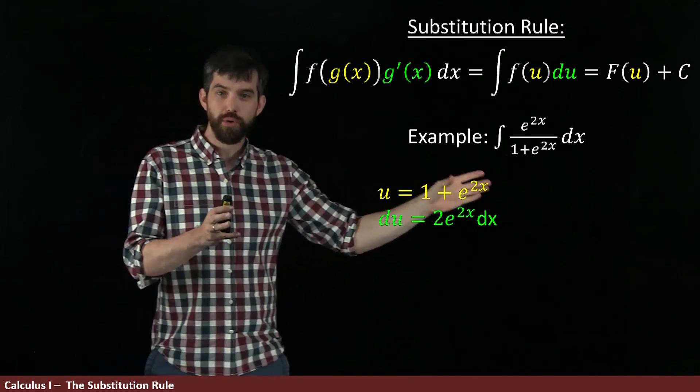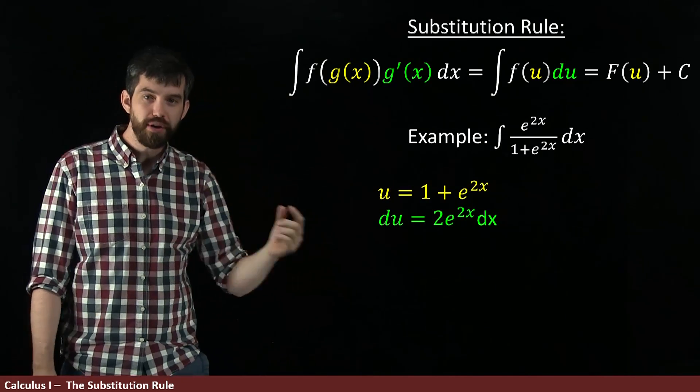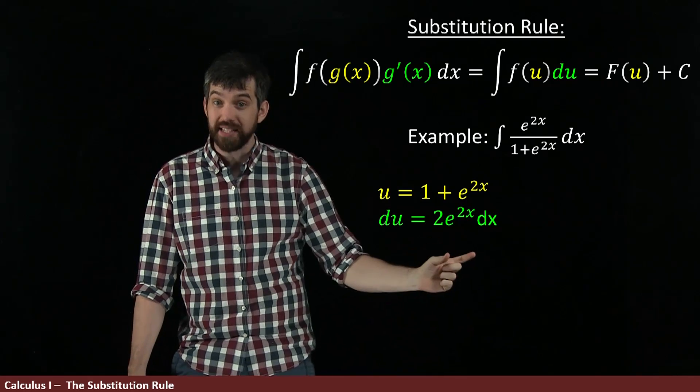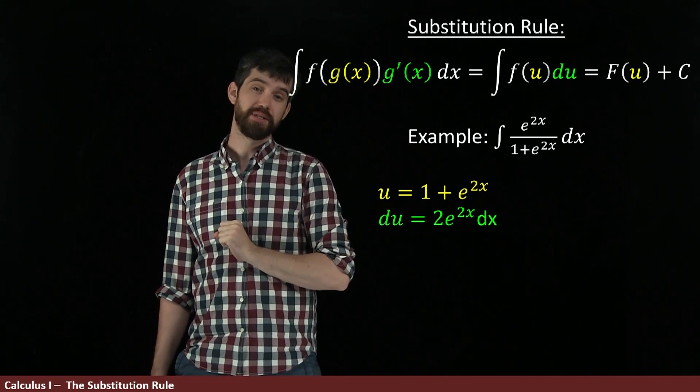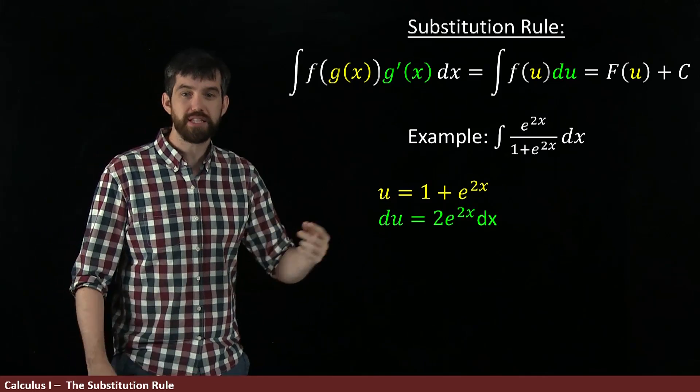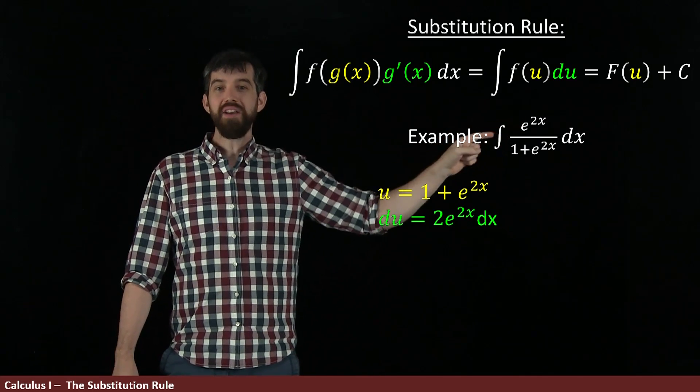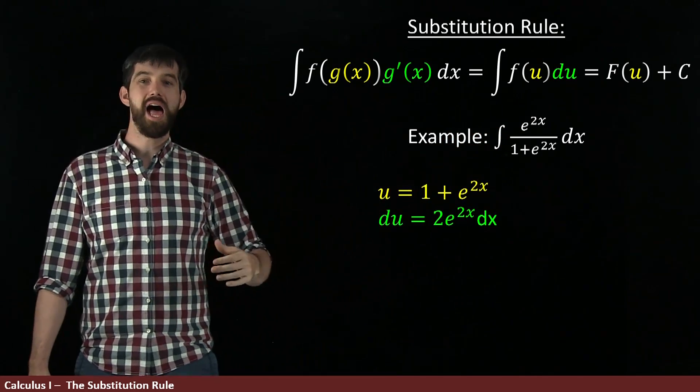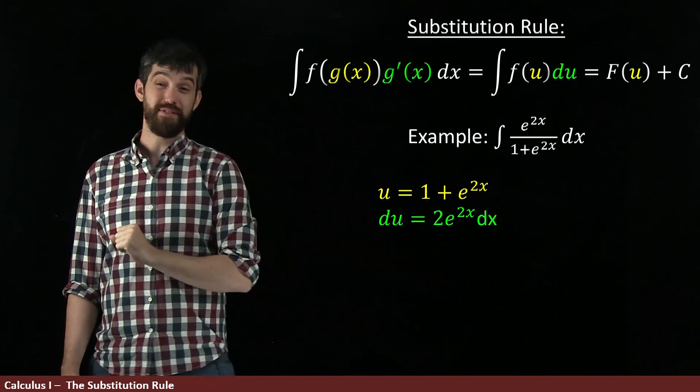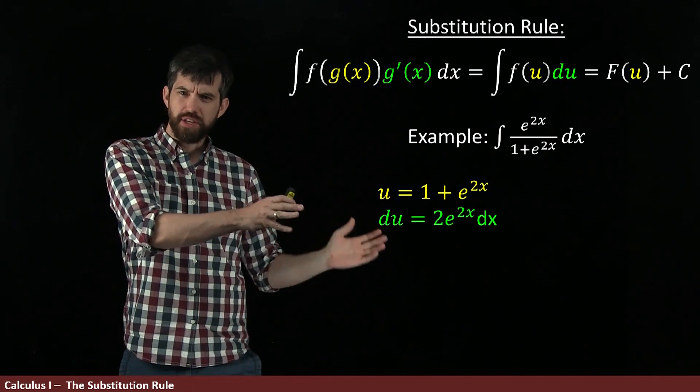Okay, so how does that work? u is the 1 plus e to the 2x, its derivative as we said was the twice e to the 2x dx. Well, if that's my u, what's my f? This looks like the function 1 divided by u times du, but we're off by this factor of 2. All right, so that's the u and the du, but what is going to be, in that case, the f?